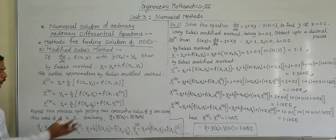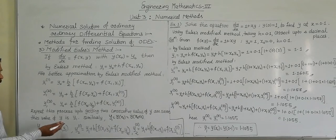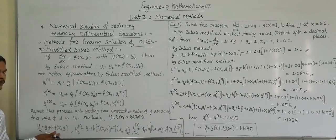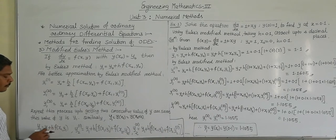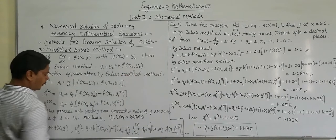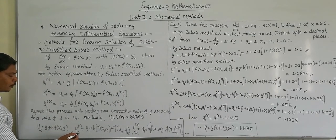Once y1 is found, which is the value of y at x1, that is y at x0 plus h, we then find y2. By Euler's method, y2 becomes y1 plus h into f of x1 comma y1. Then we apply the Modified Euler's method to improve this approximation.